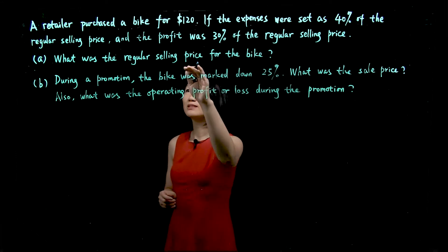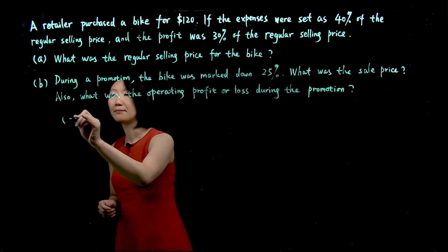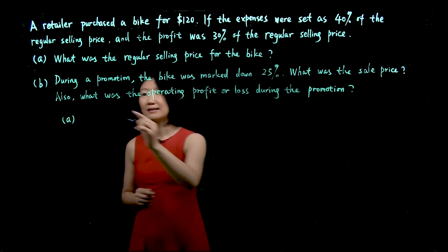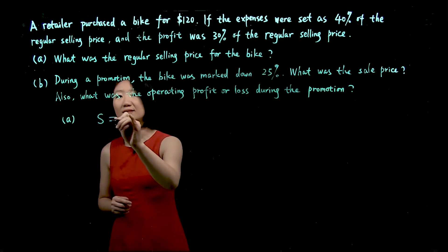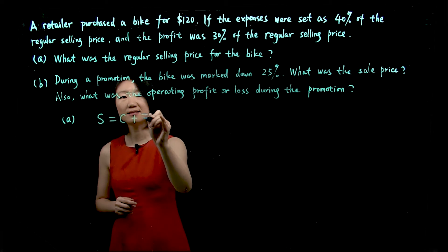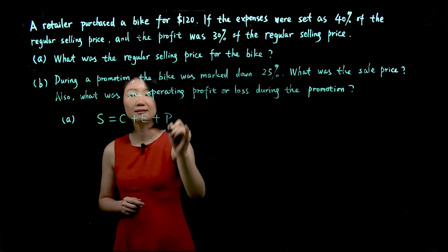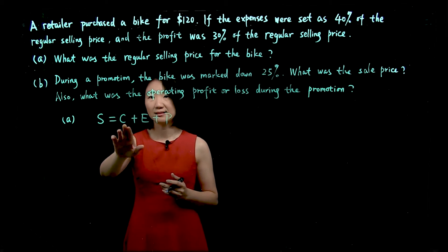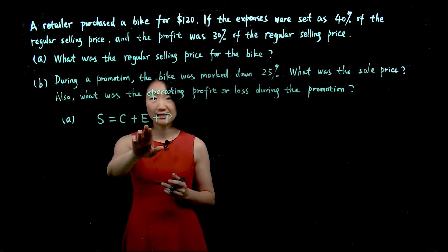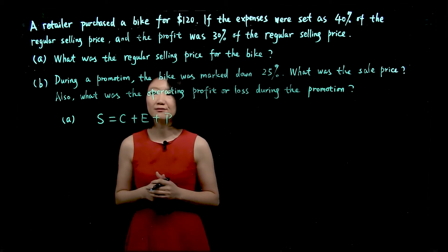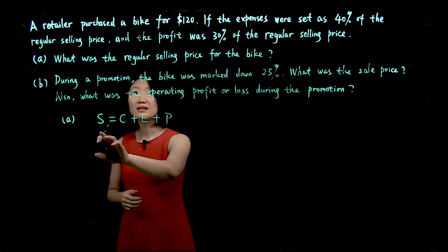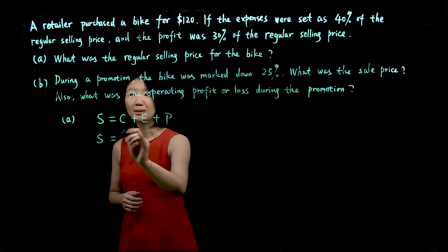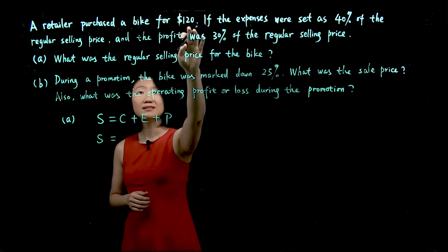Let's look at question A first. The regular bike selling price covers the cost, expenses, and profit. In this formula, S stands for regular selling price, C is for cost, E is for expenses, and P is for profit. Regular selling price is unknown — that's what we're looking for. But we do know cost: cost is $120.